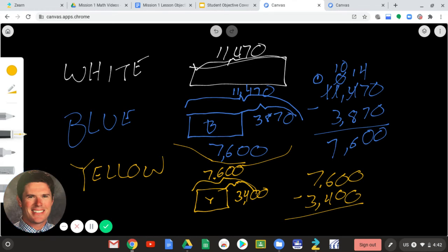And look, I don't even have to borrow here. 0 minus 0 is 0, 0 minus 0 is 0, 6 minus 4 is 2, 7 minus 3 is 4. 4,200 is the amount of yellow paper.